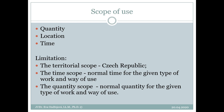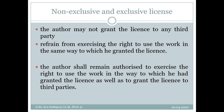In the license agreement you need to define quantity — for example how many copies you would like to reprint — location, whether it's in the Czech Republic, the EU, or other states, and time scope: for one year, five years, or ten years. There are two types of license agreement: non-exclusive and exclusive. In an exclusive license, the author may not grant the license to any third party, and the author is also refrained from exercising the right in the same way as licensed. This means you likely get much more money, but you cannot give the same license to a third person or exercise it yourself.